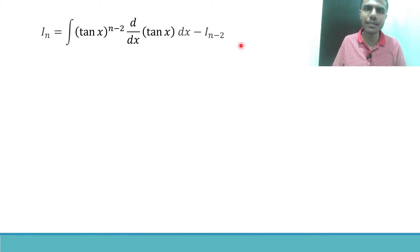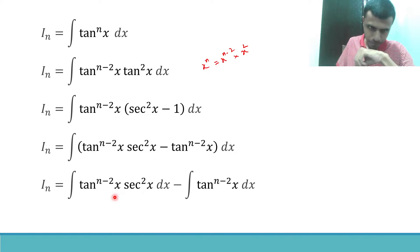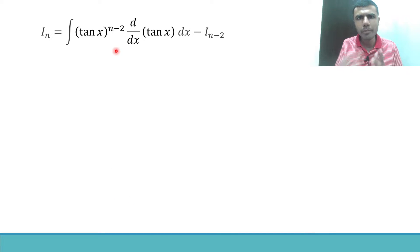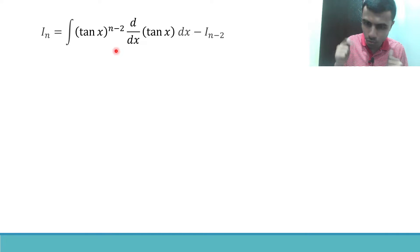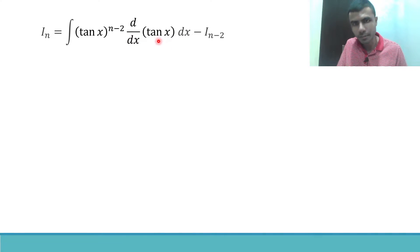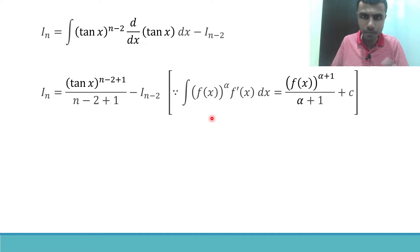Now observe carefully: I have tan^(n-2) x, which I wrote as (tan x)^(n-2), and I also have the derivative of tan x. There's something special here — I can use a formula from indefinite integration. The formula states: the integral of [f(x)]^α · f'(x) dx equals [f(x)]^(α+1) / (α+1) + C.